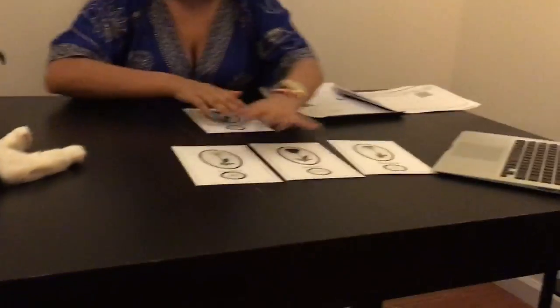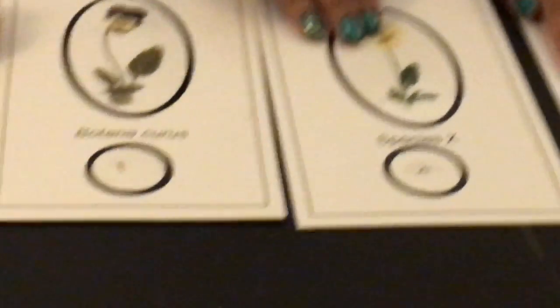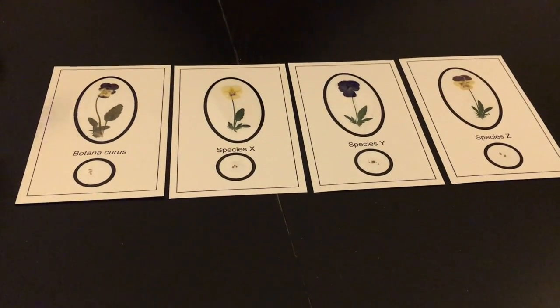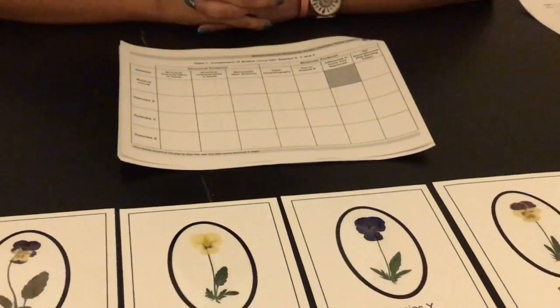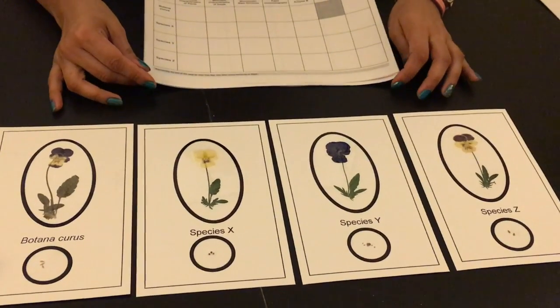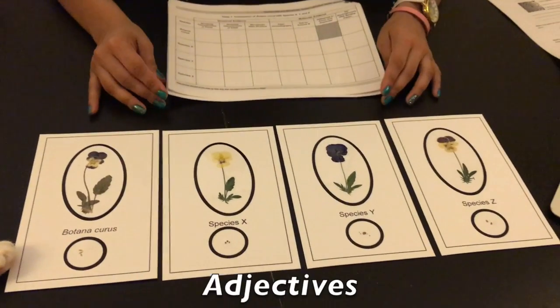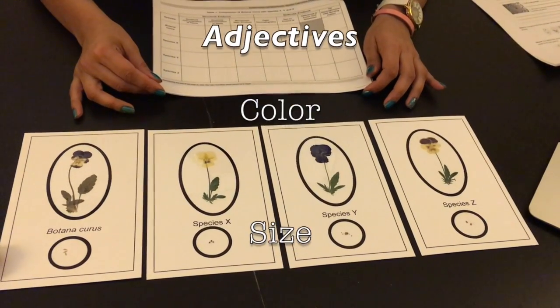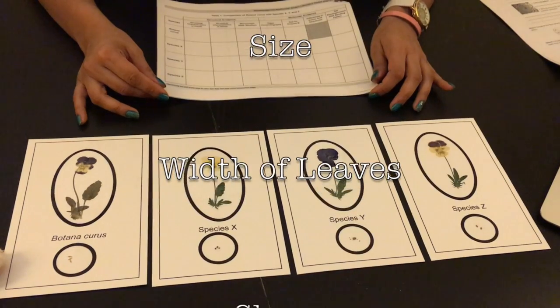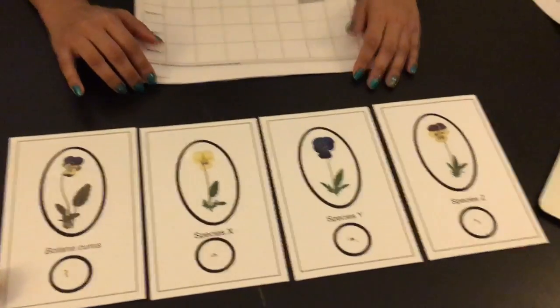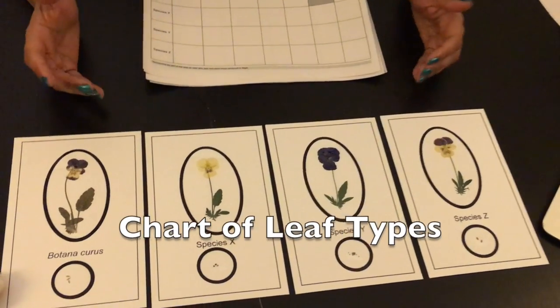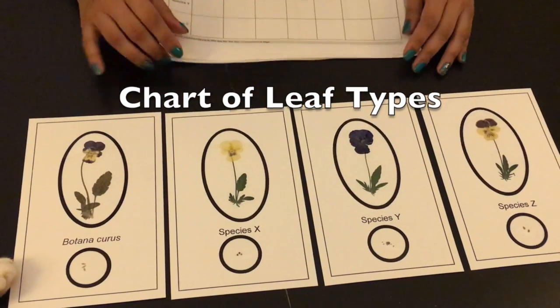The first test is a structural comparison. We lay out Botanicurus on one side and plant samples X, Y, and Z on the other. In column one, students compare the structural similarities. Depending on ability levels, it can help to give them a list of adjectives — such as color, size, width of leaves, leaf shapes, and flower petals. For higher-level students, you can ask them to compare leaf types and provide a chart of different leaf types.